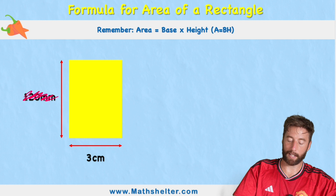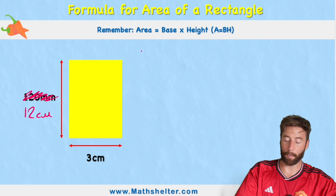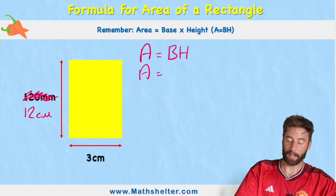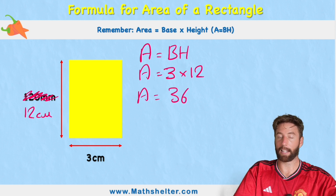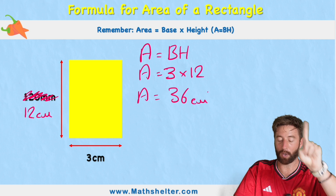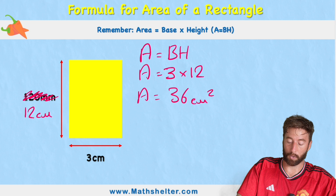So let's get rid of 120 and write 12 centimetres. Now I'm ready to just use my formula. Area equals base times height. Therefore area in this case is 3 times 12. Area equals 36 centimetres squared.